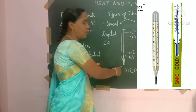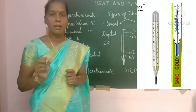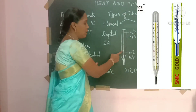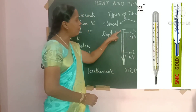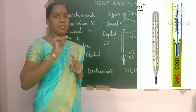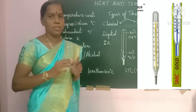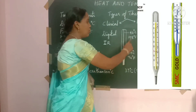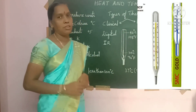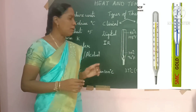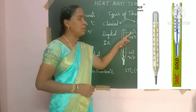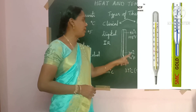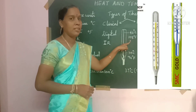There is a nick near the bulb, and the other end of the tube is connected to a cylindrical bulb filled with mercury. The mercury rises up the stem, and the other end is sealed with air removed. The clinical thermometer can take readings from 35 degrees centigrade to 42 degrees centigrade, or from 94 degrees Fahrenheit to 108 degrees Fahrenheit.